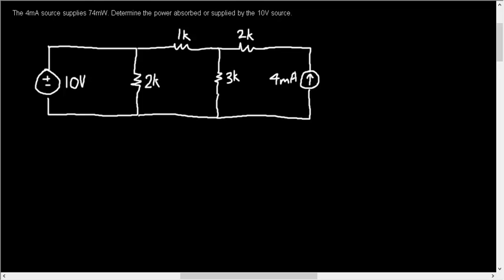The 4 milliamp source supplies 74 milliwatts. Determine the power absorbed or supplied by the 10 volt source. So in terms of where to start in this problem, they tell you that the 4 milliamp source supplies this much power.